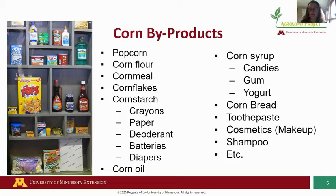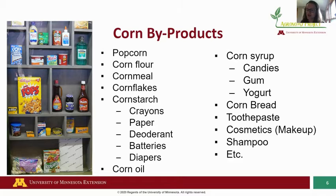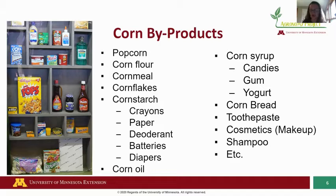Much of our food is made from corn syrup as well, such as candies — gum included — and also, surprisingly, yogurt. You would think yogurt is mainly a dairy byproduct, but corn syrup is added to give it that sweeter flavor. Other products made from corn include many daily items such as toothpaste, cosmetics, shampoos, and so much more.